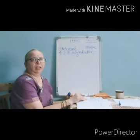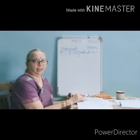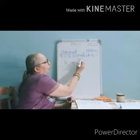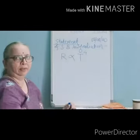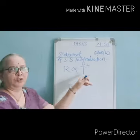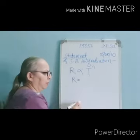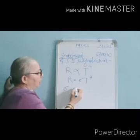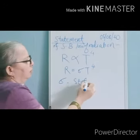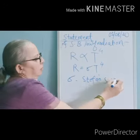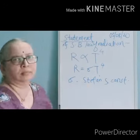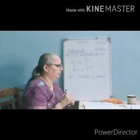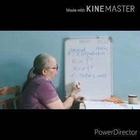Please note down the theoretical statement of Stefan-Boltzmann law in your notebook. Statement: The rate of emission of radiant energy per unit area is directly proportional to the fourth power of its absolute temperature. Mathematically, the emissive power R is proportional to T⁴, that is R = σT⁴, where σ is called Stefan's constant.